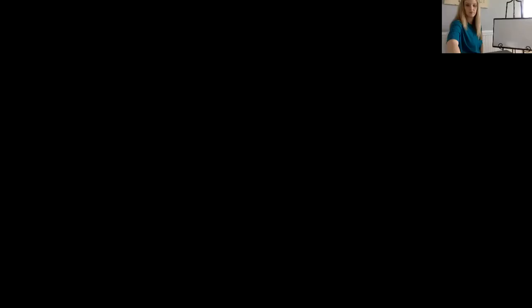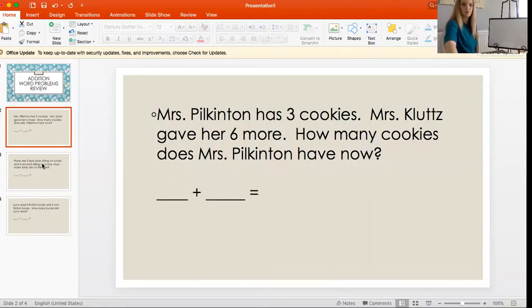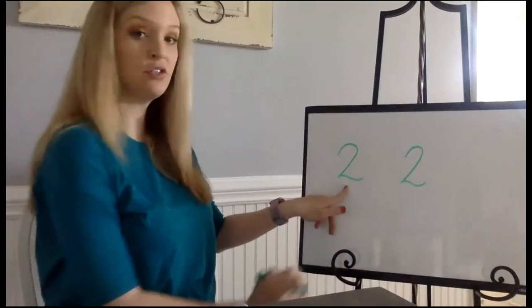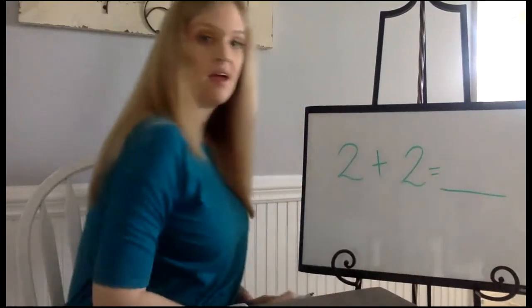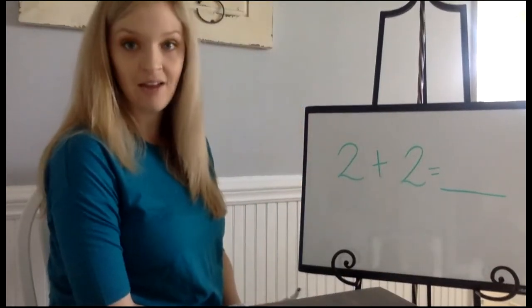Let's read our equation. There are two blue birds sitting on a tree and two red birds. So let's solve. Let's make it into an equation: 2 + 2 = blank. I need to figure out how many birds are sitting on a tree.